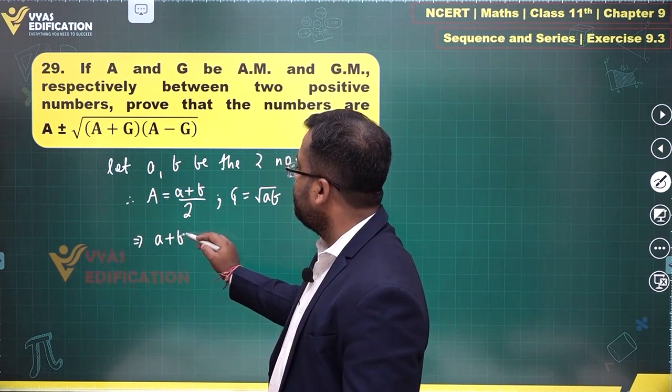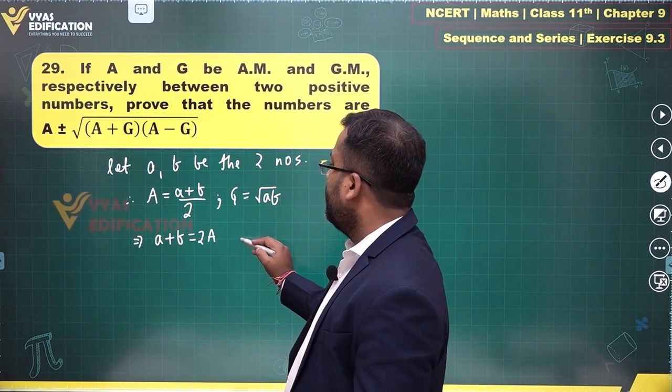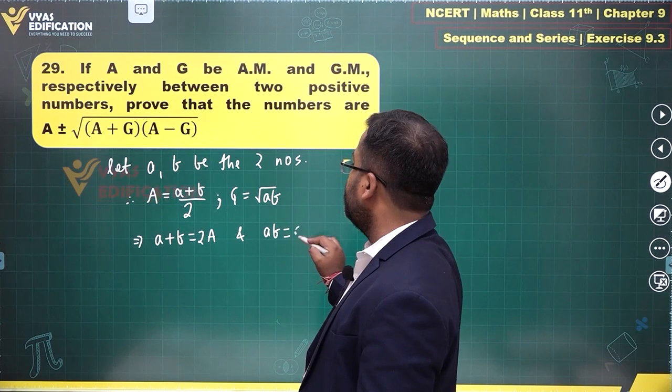Here we have the relations: a + b = 2A and ab = G².